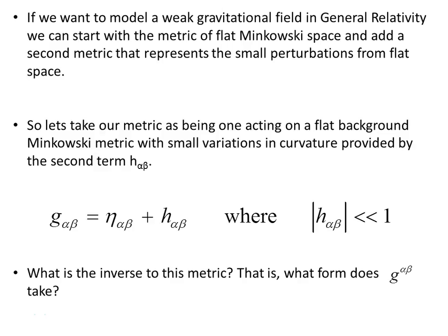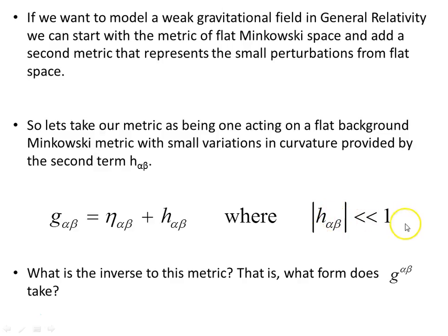If we want to model a weak gravitational field in general relativity, we can start with a metric of flat Minkowski space and add a second metric term representing small perturbations from flat space. So the metric G_αβ with covariant indices is eta — the flat Minkowski metric — plus this small perturbation term h_αβ, where the size of the perturbation term is much less than one. It's a very small variation from flat space.